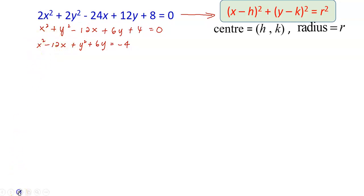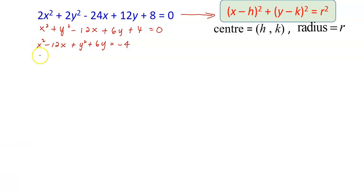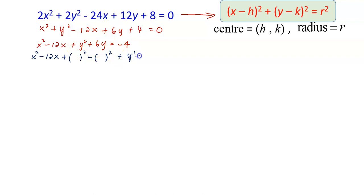I'm going to complete the square on these two terms first. So how do we do completing the square? We copy down the terms x² − 12x, then add a bracket squared minus a bracket squared. The same thing for the y term — I copy down the two terms y² and 6y, add a positive bracket squared and a negative bracket squared, and the right-hand side equals −4.